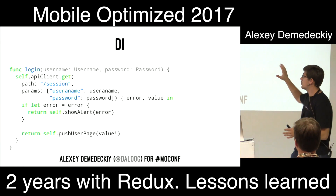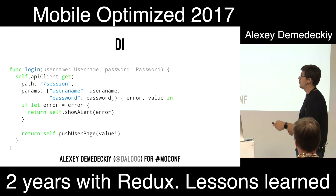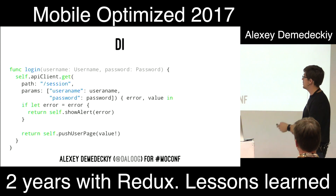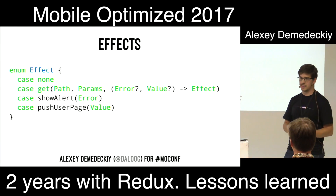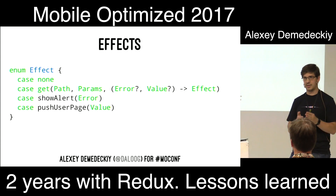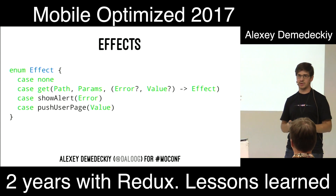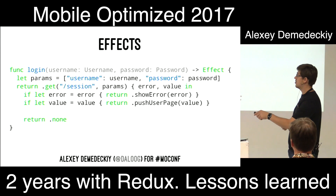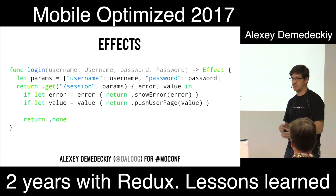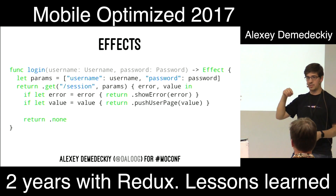Here's some example code of how we write logic with a dependency. We have a login function that gets API client methods, path parameters, and handles states by calling show alert or push user page. This code actually violates the single responsibility principle — it answers two questions at once: what I need to do for login, and how I need to do it for login. Having this hidden behind a protocol doesn't solve it — you're still telling how you need to call this instance.